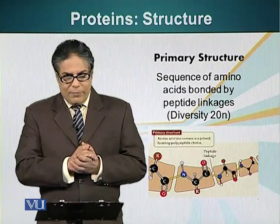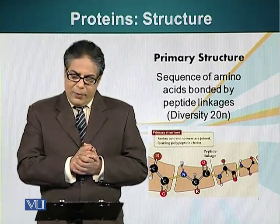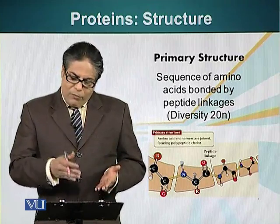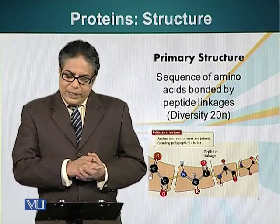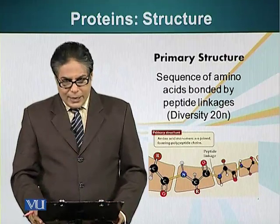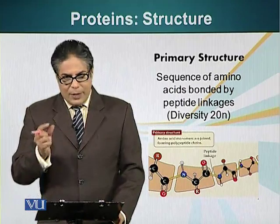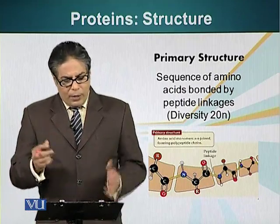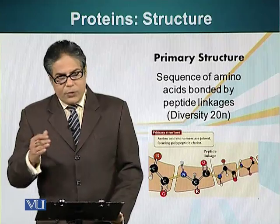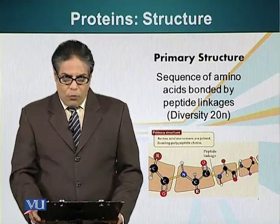As we have mentioned, there are 20 amino acids, so the formula for calculating diversity is 20 raised to the power of N, where N is the number of amino acids present in a protein. So if we are talking about just two amino acids, it will be 20 to the power of 2, which is 400.